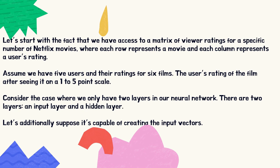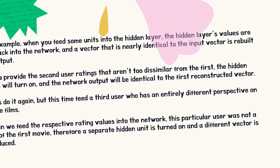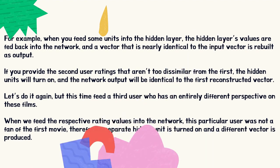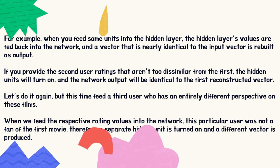Consider the case where we only have two layers in our neural network: an input layer and a hidden layer. The network is capable of recreating the input vectors — when you feed some units into the hidden layer, the hidden layer values are fed back into the network and a vector nearly identical to the input vector is rebuilt as output.